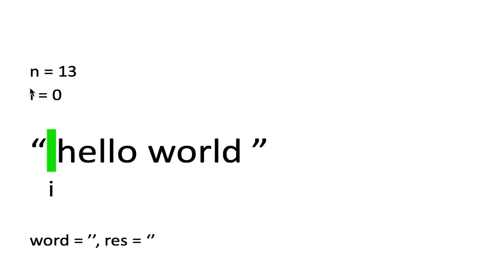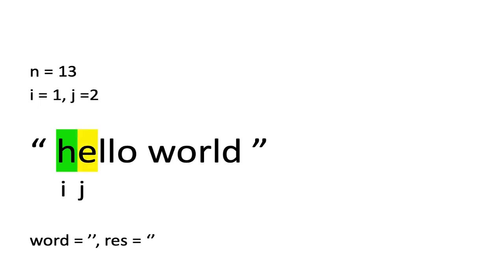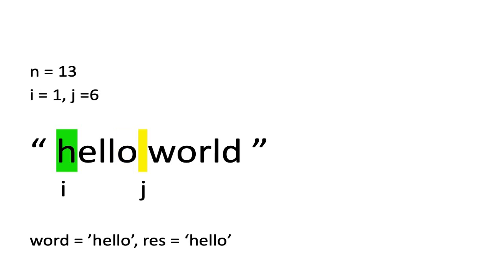First, I'm initializing n as the length of the string and i as 0. I have declared two string variables, word and result, both initialized to an empty string. The first step is to iterate over i until I find a space. Once I find a space, I will assign the string from i to j to the variable word.